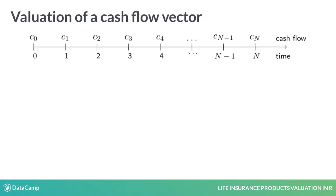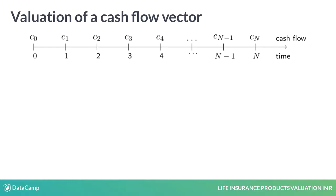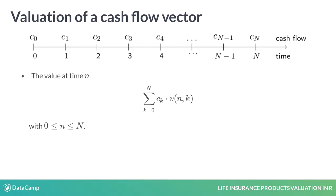You now have a general mechanism to value a cash flow vector at any point in time. You convert each cash flow ck in the vector from time k to time n using discount factor v(n,k). The sum over all entries in the vector then gives you the value at time n. When n is equal to 0, you obtain the present value of the cash flow vector. When n is equal to capital N, the time point corresponding to the last entry in the vector, you obtain the vector's accumulated value.